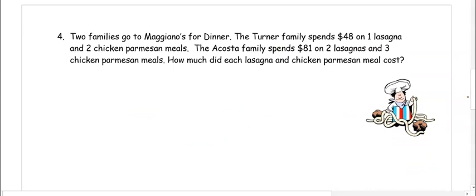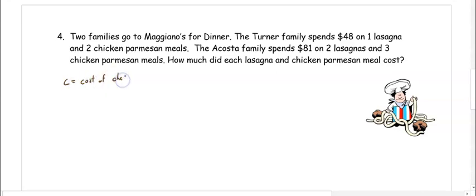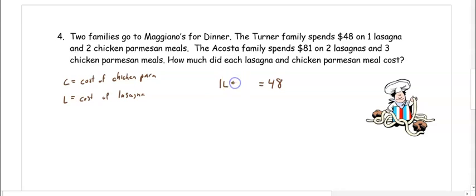In number four, two families go to Maggiano's for dinner. The Turner family spent $48 on one lasagna and two chicken Parmesan meals. The Acosta family spent $81 on two lasagnas and three chicken Parmesan meals. How much does each lasagna and chicken Parmesan cost? Our variables are L for lasagna and C for chicken Parmesan. The Turner family spent $48: one lasagna and two chicken Parmesan. The Acosta family spent $81: two lasagnas and three chicken Parmesan.